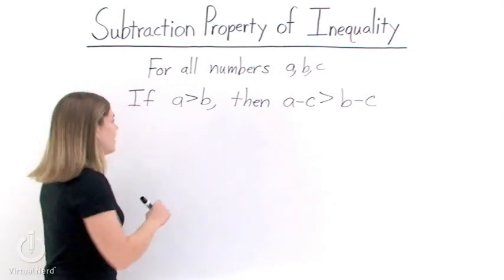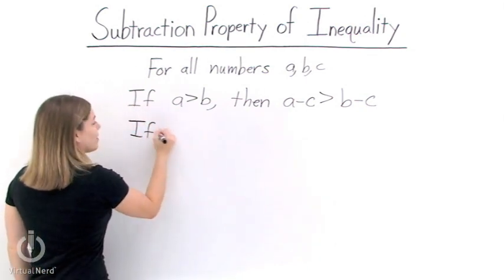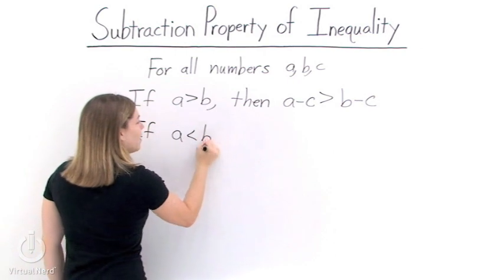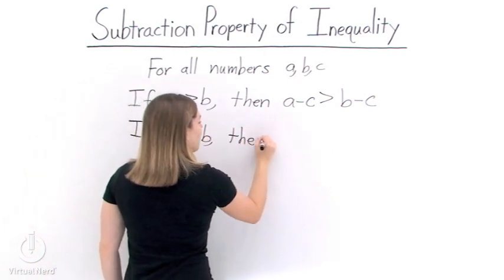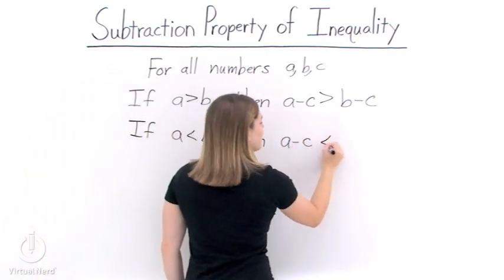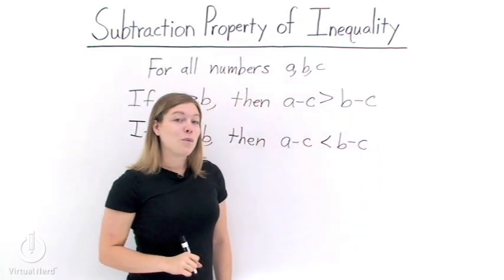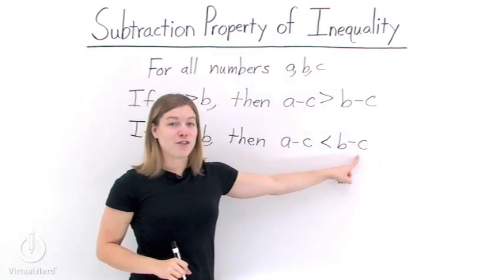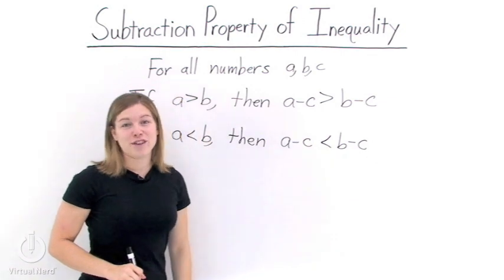Same thing goes for less than. If we have a is less than b instead, then we have that a minus c is less than b minus c. Again, we subtract c from both sides of our inequality in order to preserve the inequality.